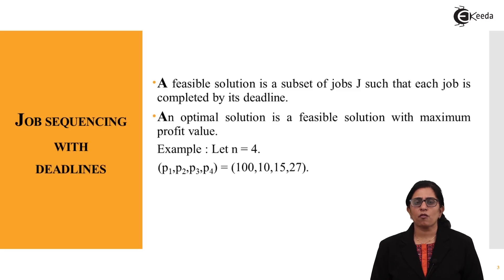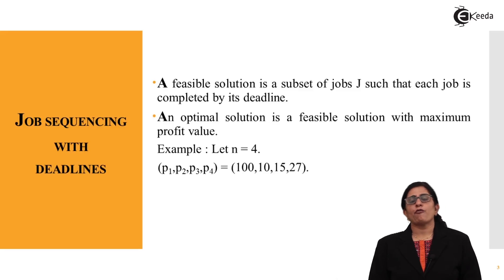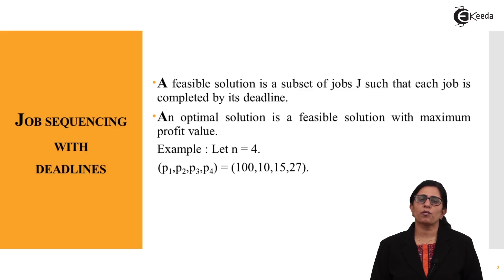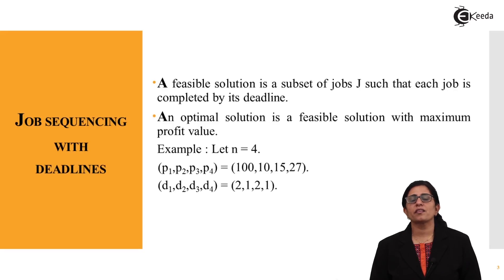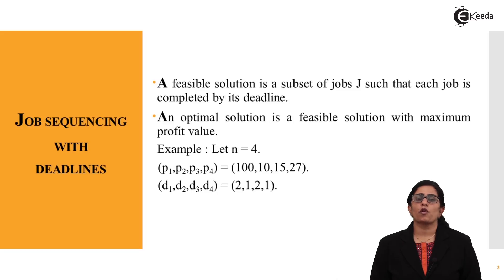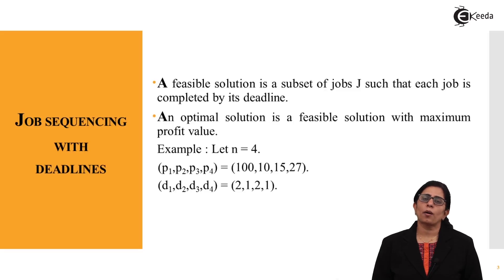Let us take an example where n equals 4. I have 4 processes P1, P2, P3, and P4 with profit values 100, 10, 15, and 27 respectively, and deadlines D1=2, D2=1, D3=2, D4=1. Each process must complete within its deadline to gain profit.